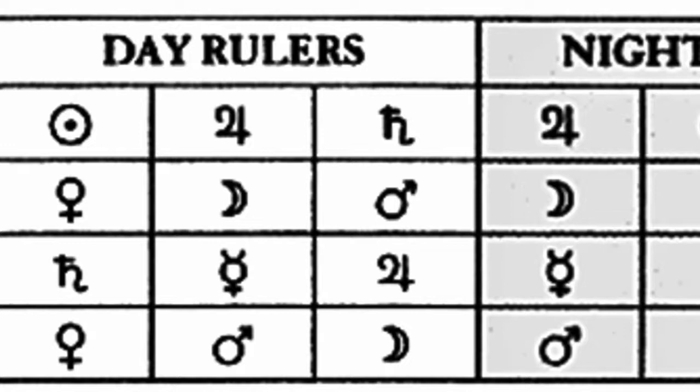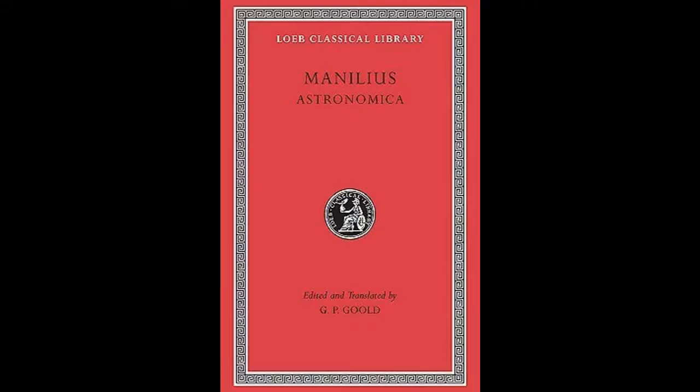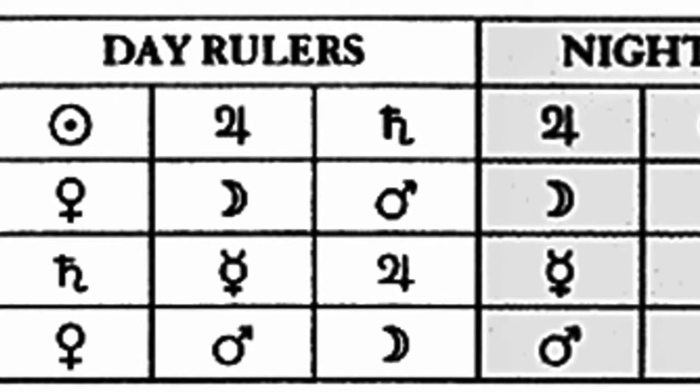They are also evident in the use of triplicities, the connection of signs that share a common agreement, and in the determination of planetary dignity through the use of triplicity rulers. In the first century, the astrologer Manilius wrote in his Astronomica that triangles inscribed within the cycle of the zodiac group the signs into four sets of triplicities.